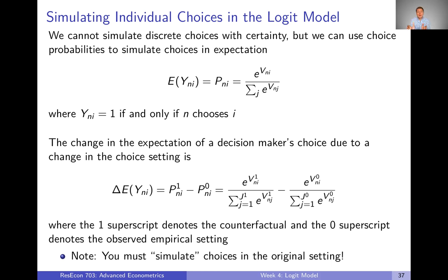When thinking about how choices change due to a change in attributes or the choice set, we can express the change in the expectation of a decision maker's choice as: delta E[y_ni] equals the choice probability in the counterfactual (superscript 1) minus the choice probability in our observed empirical setting. So it's as simple as calculating a choice probability using the new data or new choice set, calculating the choice probability in the original setting, and taking the difference.